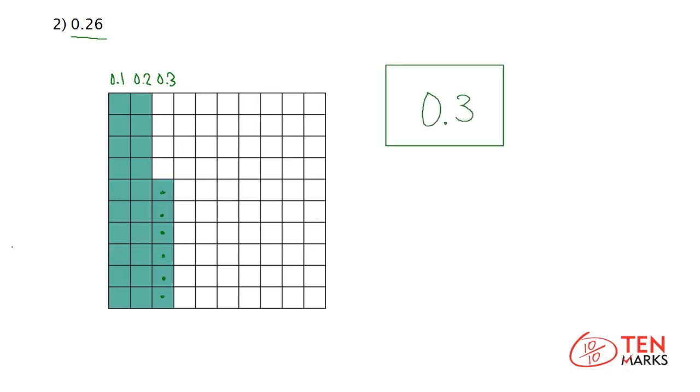To round a number to any place, look at the digit to its right. If the digit is greater than or equal to 5, round up to the next number. If the digit is less than 5, round down, which means retain the original number.